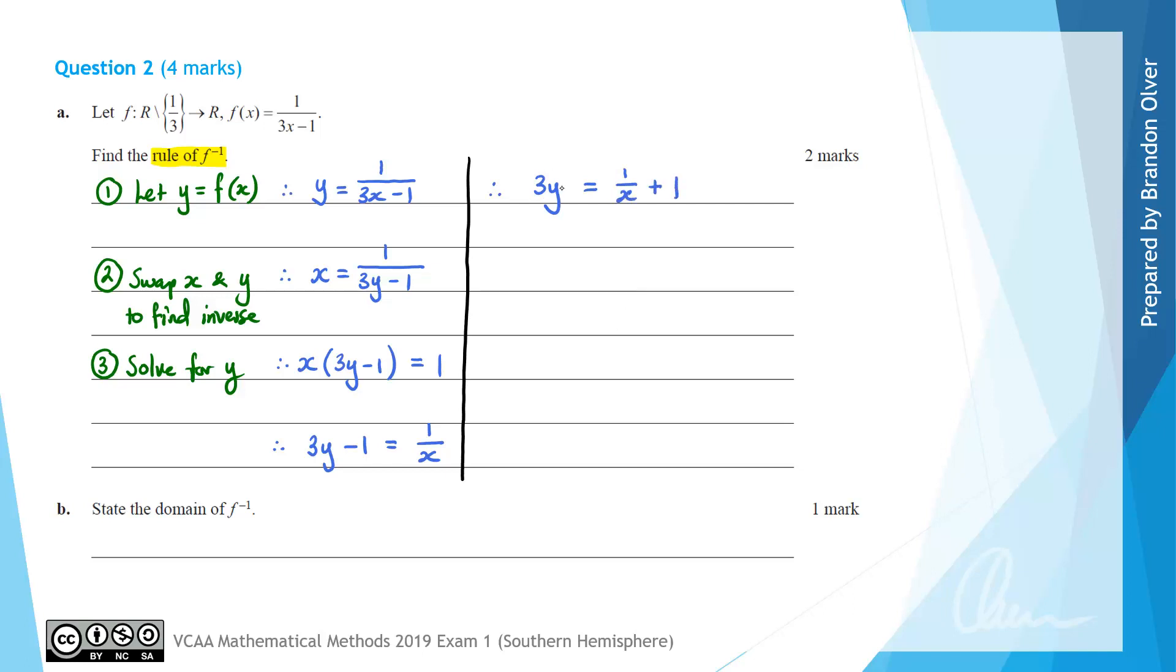The next step to get y by itself is to divide by 3, which I like to think about as multiplying by 1/3. Just a reminder that you'll have to multiply all of that by 1/3. The same thing will happen on the left hand side.